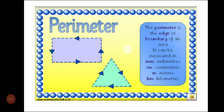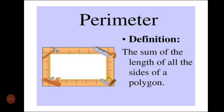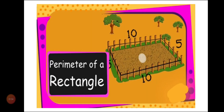The perimeter is the edge or the boundary of an area. It can be measured in millimeters, centimeters, meters, or kilometers. Dear students, before starting the exercise, you must write down this definition of perimeter in your notebook.